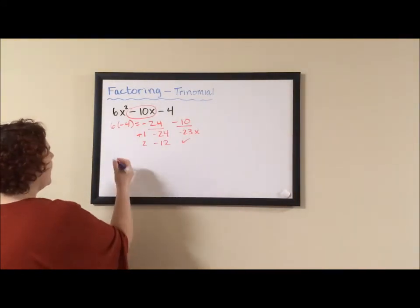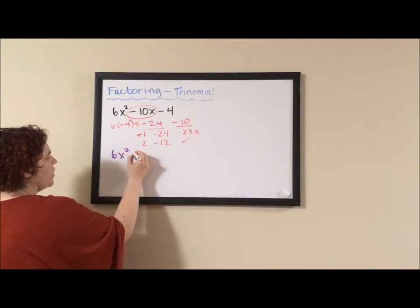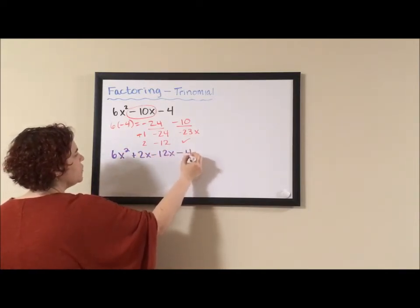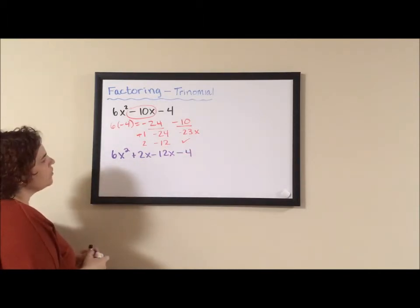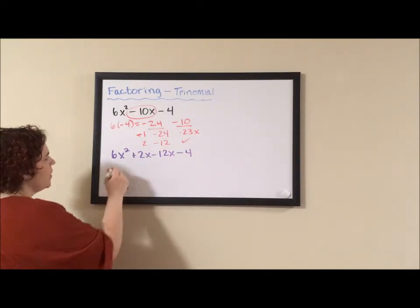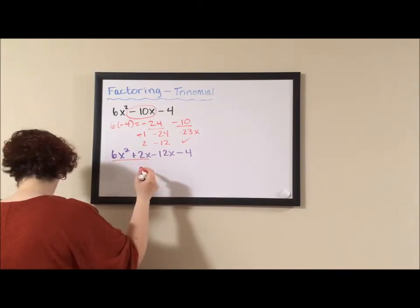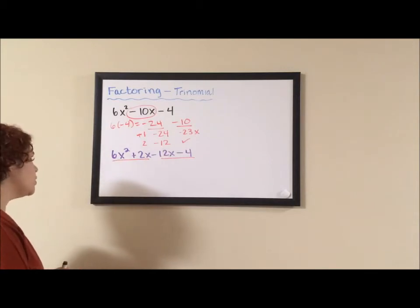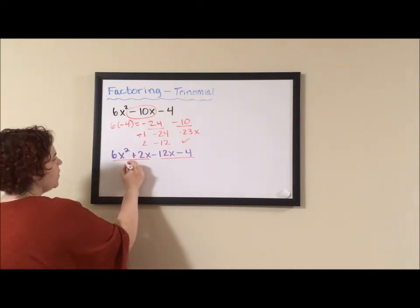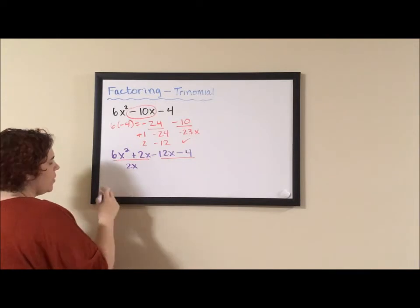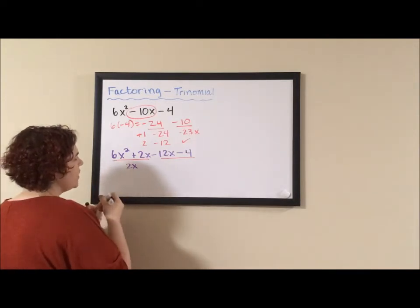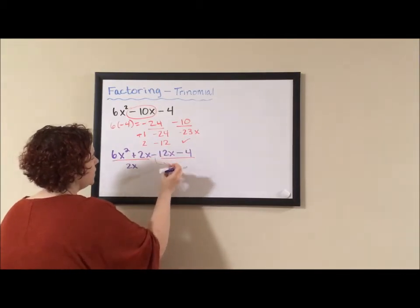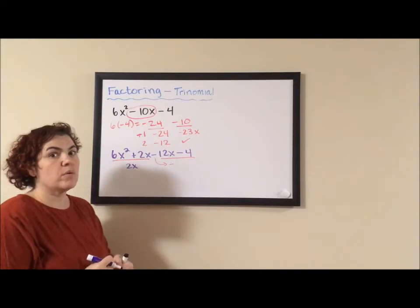So we now have 6x squared plus 2x minus 12x minus 4 and we want to factor by grouping. So we're going to group our first two terms and we're going to group our second two terms. In our first two terms, we can pull out a 2x. In our second two terms, oh and we need to bring down this negative. Always, always, always bring down the sign of your middle term. Otherwise, things are going to go awry.